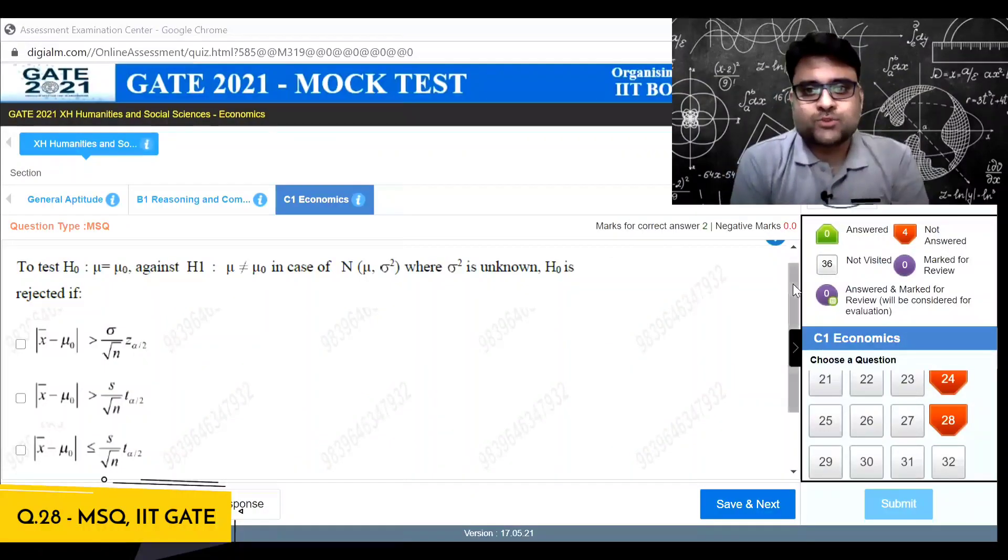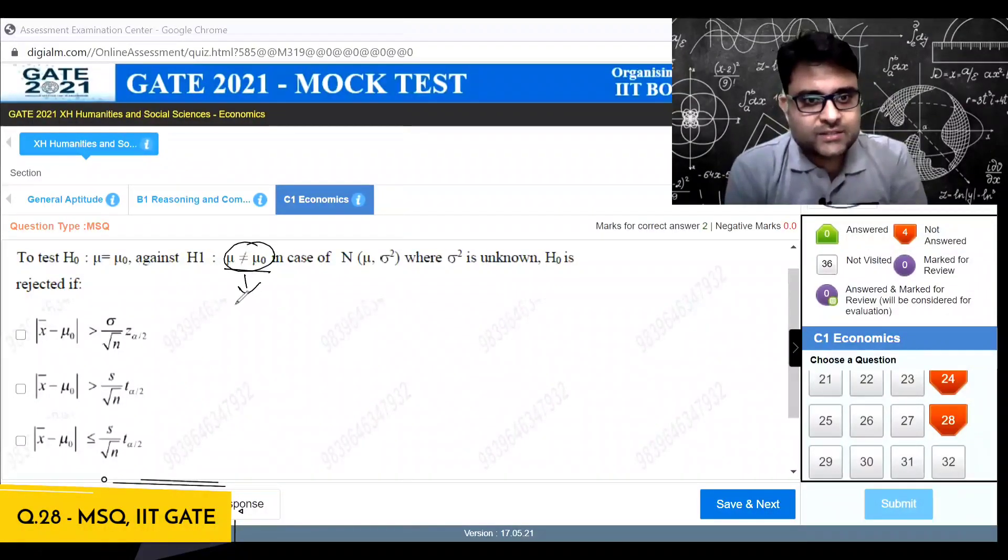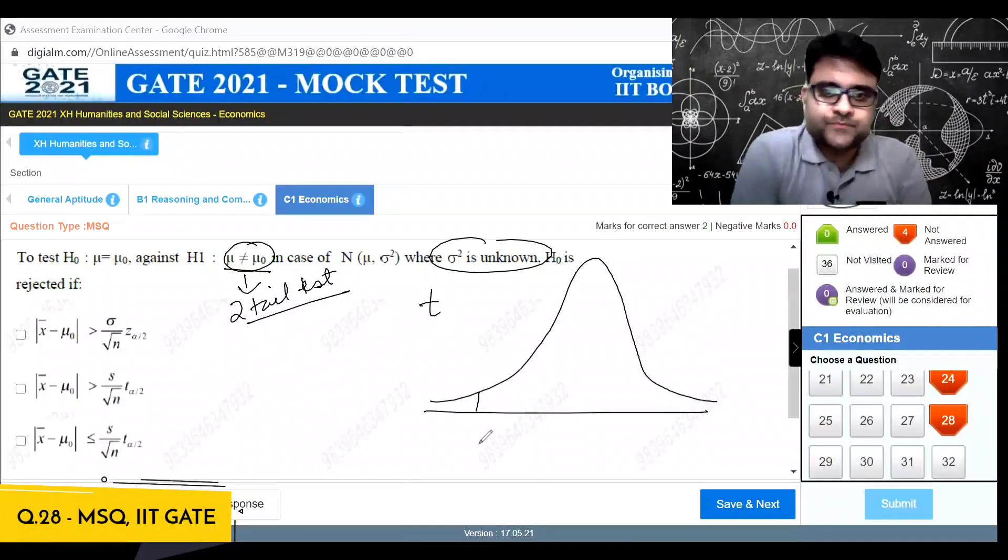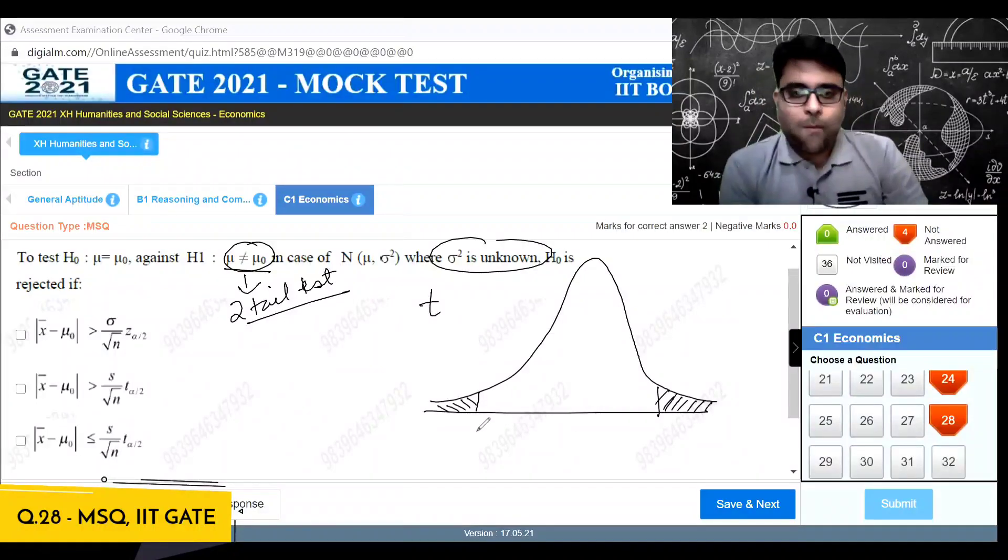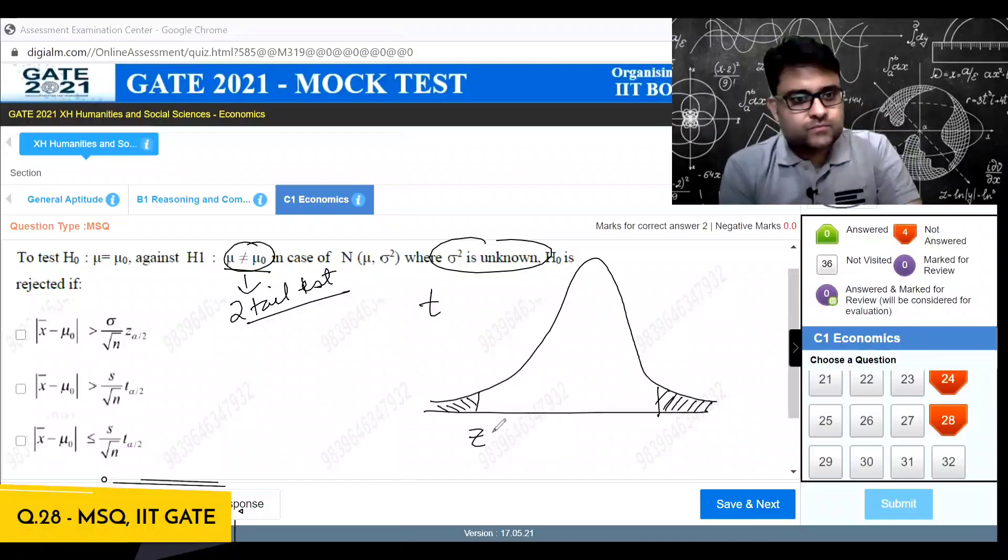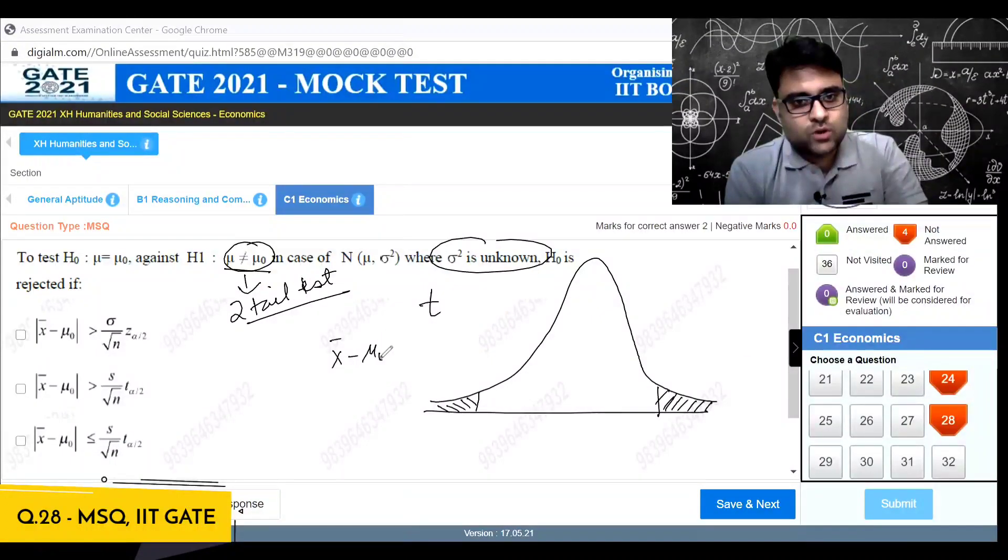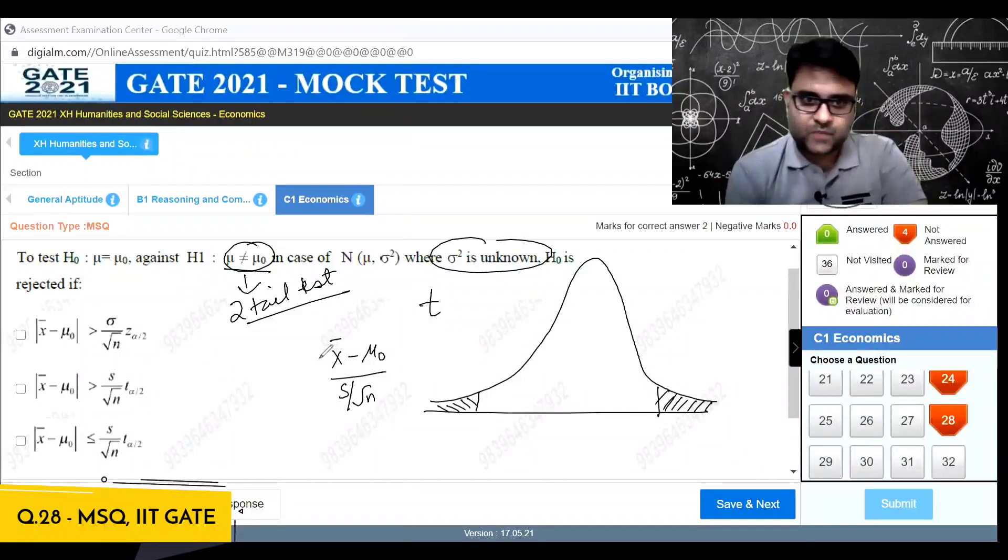IIT Gate 2021 mock test question number 28. We are supposed to test mu is equal to mu naught versus the alternative mu not equal to mu naught, so it's a two-tailed test. Sigma square is unknown so we'll use the t-test. The critical region will be this part and this part. The t-test or the statistic value is x bar minus mu naught by s by root n, sample standard deviation by root n.